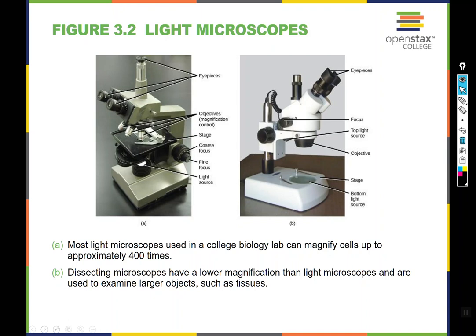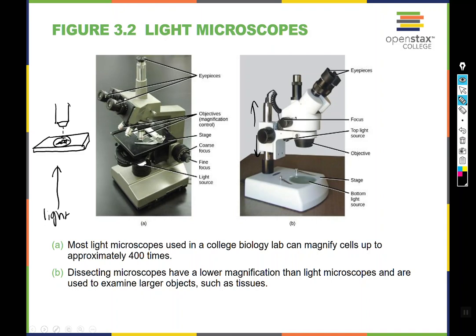Here we have some light microscopes — the kinds you've been using. They look a little different than the ones in lab, but have all the same parts. A is a compound light microscope where the light comes up from the bottom and shines through a transparent specimen on a slide under a piece of cover glass, and you use the objective lens to look at it. The dissecting microscope has a platform with stage clips and an objective lens that is not switchable — instead, you turn a knob and the entire apparatus goes up or down toward or away from the specimen. This is a lower magnification microscope used to examine larger objects such as tissues, which is why it's called a dissecting microscope.